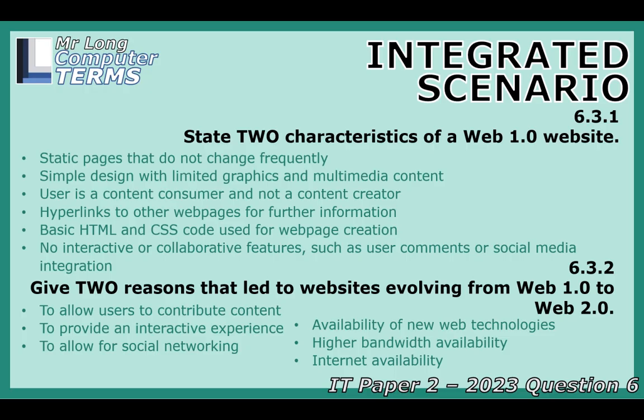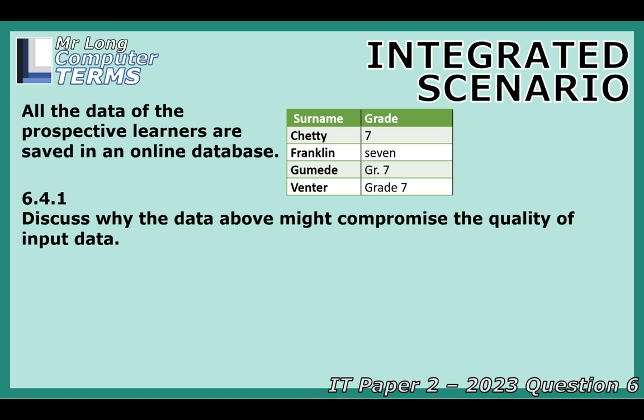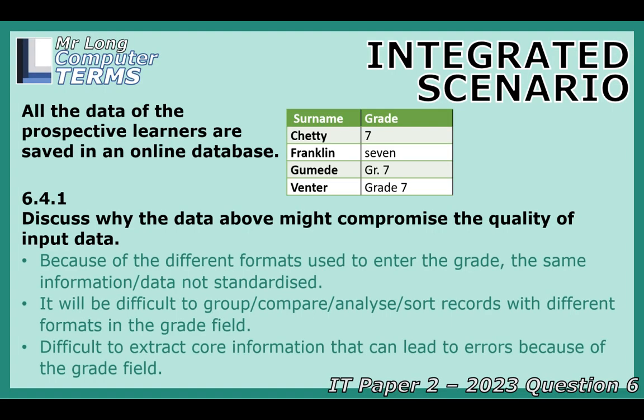The data collected from registration forms goes into an online database. There's an example of inconsistent grade entries: 7, 7, GFE7, Grade 7. Why is that kind of messiness a problem for data quality? Even though all those entries mean the same thing to us, to a computer processing the data, 7 and Grade 7 are totally different strings of text. If the school wants to count how many 7th graders registered, sort by grade, or analyze trends, this inconsistency makes it incredibly difficult — it introduces errors and makes analysis unreliable. Garbage in, garbage out.